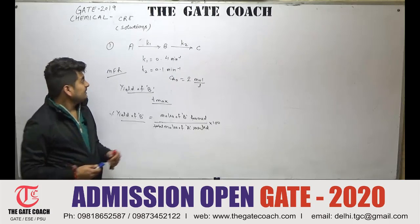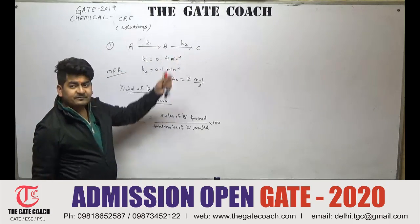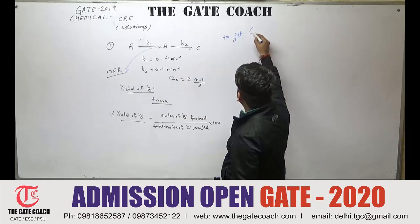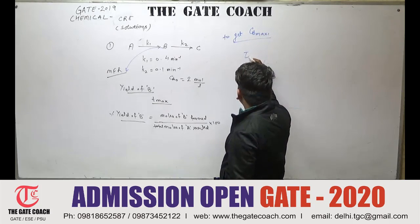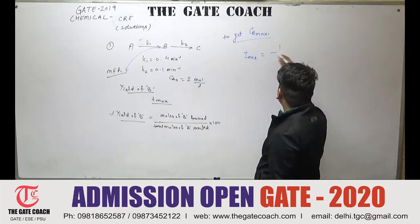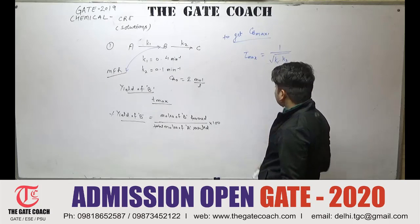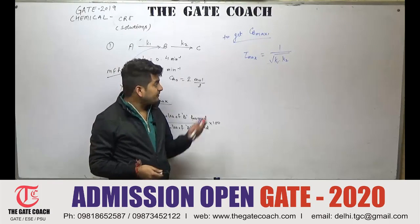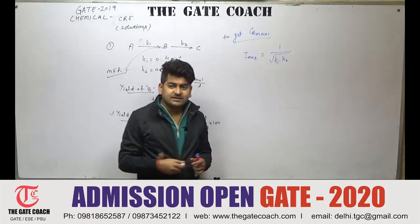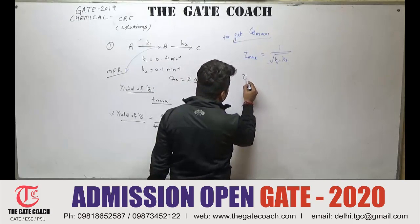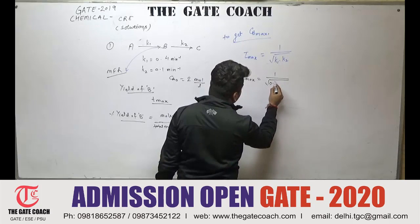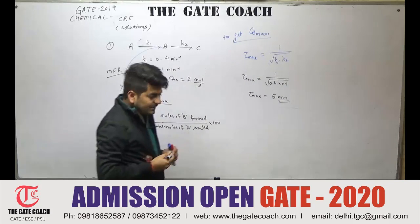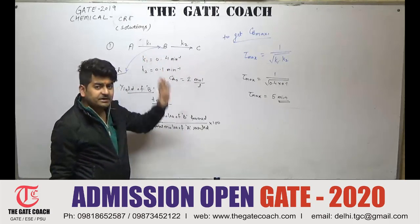This is a first-order series reaction followed by a first-order reaction. For such reactions operating in an MFR, to get CB_max, tau_max can be calculated as 1 over the square root of k1 × k2. This is a basic question also discussed in our classes, and a video on this topic is available on the Gate Coach YouTube channel. Putting in k1 = 0.4 and k2 = 0.1, you get tau_max = 5 minutes. From the units of k, it is clear this is a first-order reaction.